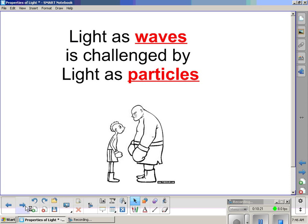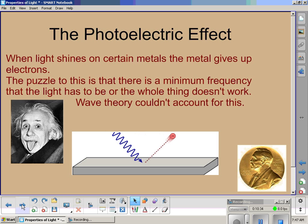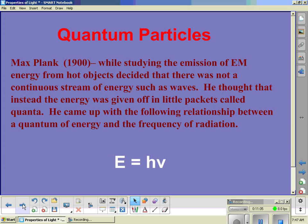For a long time, it was thought that light was a wave and that's all there was to it. Well, eventually we reached a point where light as waves was challenged by light as particles. And the guy who did that was Einstein. He was actually given the Nobel Prize for coming up with something called the photoelectric effect. When light shines on certain metals, the metal gives up electrons. But the thing is, the puzzle to this is that there's a minimum frequency that the light has to be or the whole thing doesn't work. And wave theory alone couldn't account for this. It just didn't make sense if you followed wave theory.